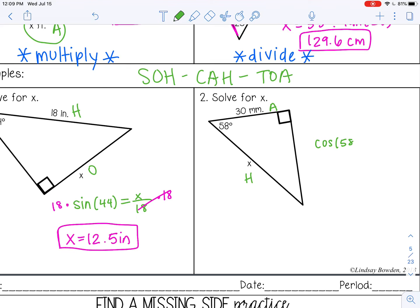So cosine of 58 equals - adjacent comes first and then hypotenuse - so 30 over x.